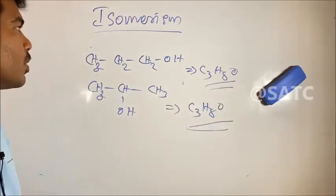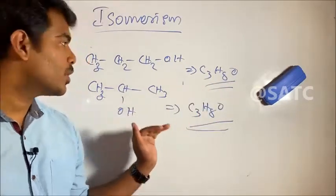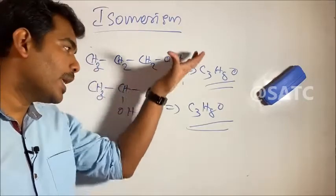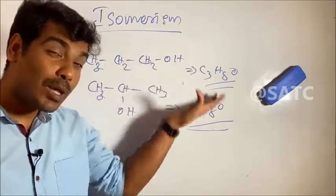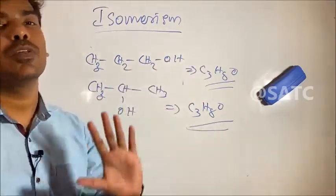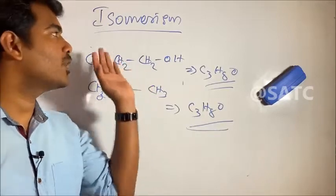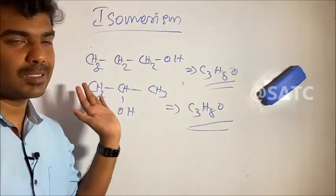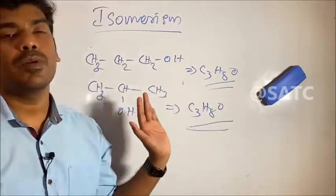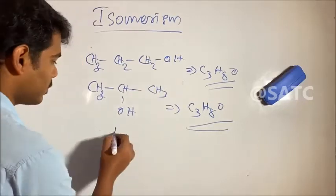So, what is isomerism? When compounds have the same molecular formula but different structural arrangements, this phenomenon is called isomerism, and the compounds are called isomers.